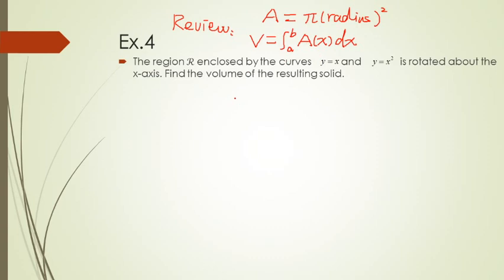Now we will check two more examples where the cross-sectional region is not a circle. Example 4: the region R enclosed by the curves y equals x and y equals x squared is rotated about the x-axis. Find the volume of the resulting solid.